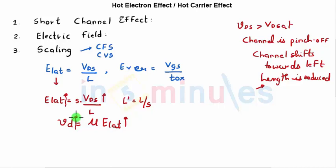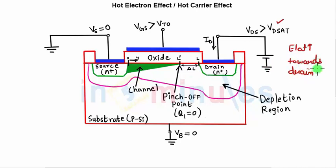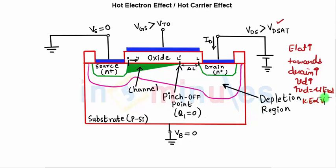To recap: as VDS increases, E_lateral increases — the electric field toward the drain increases. As E_lateral increases, drift velocity increases, since v_D = μ × E_lateral. Drift velocity is directly proportional to kinetic energy, so when velocity increases, kinetic energy tends to increase.